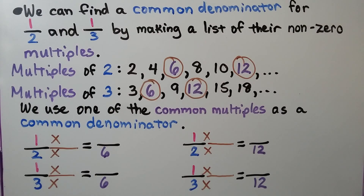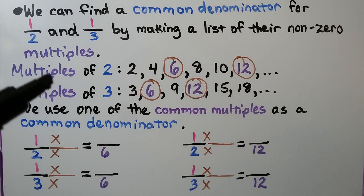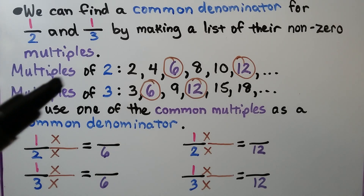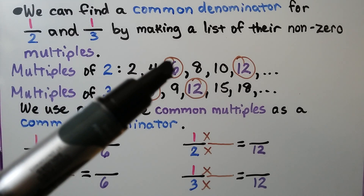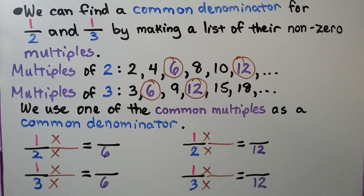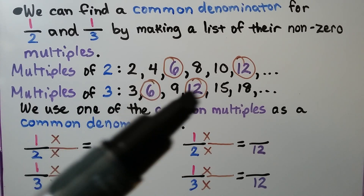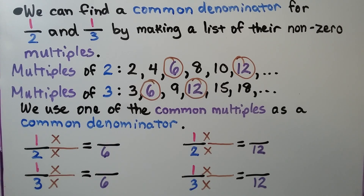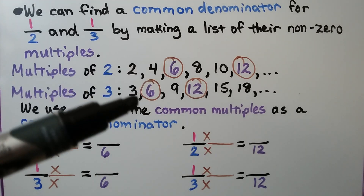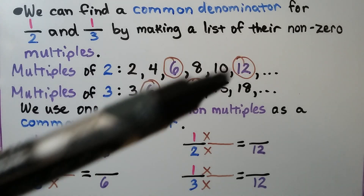We can find a common denominator for 1/2 and 1/3 by making a list of their non-zero multiples. The multiples of 2 are 2, 4, 6, 8, 10, 12. The multiples of 3 are 3, 6, 9, 12, 15, 18. We use one of the common multiples as a common denominator. We can use 6 or we can use 12.